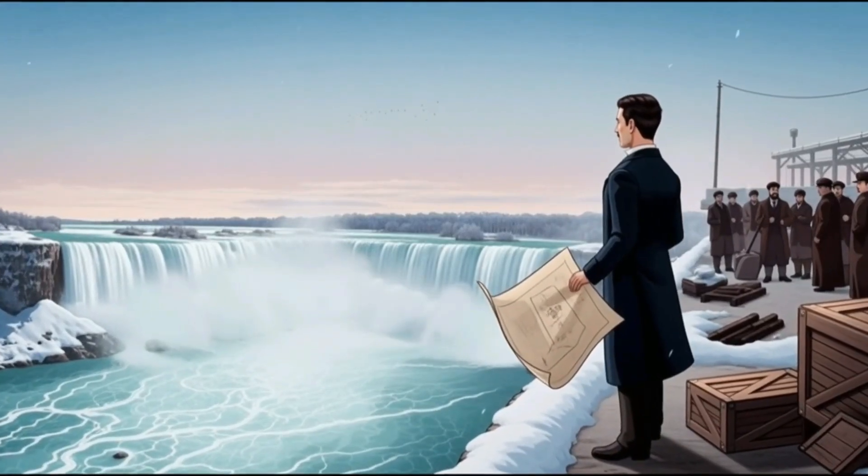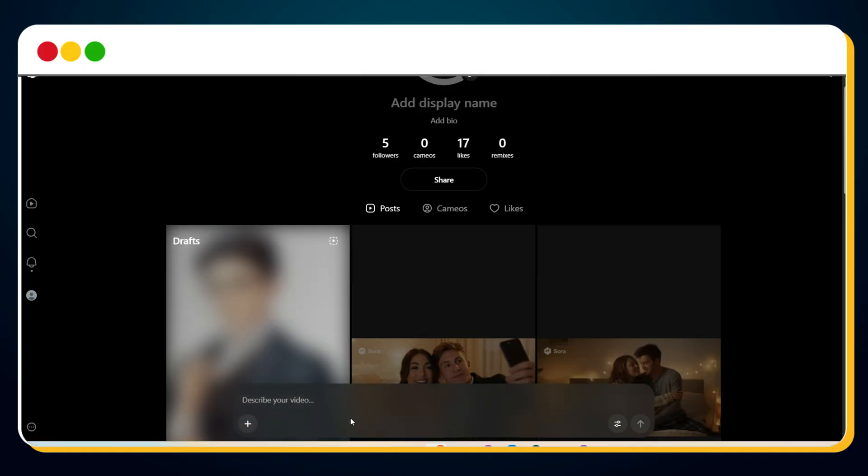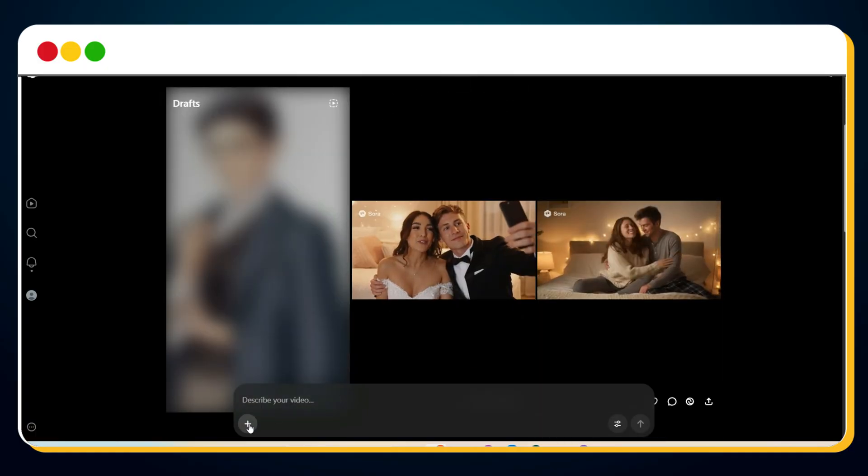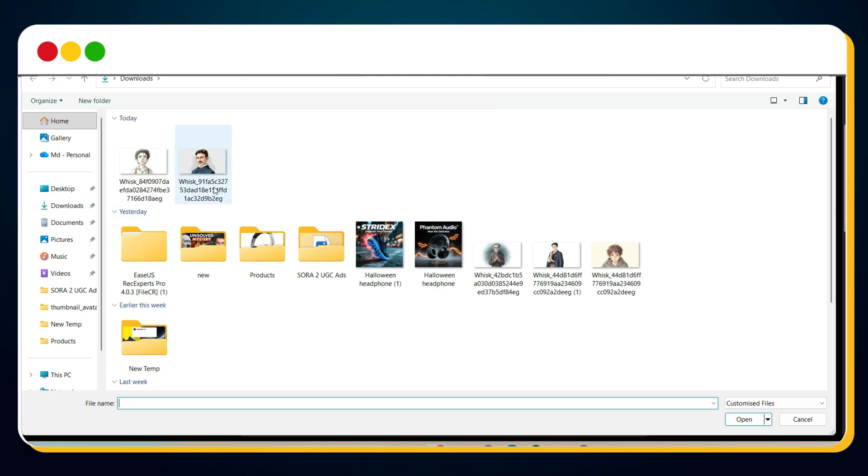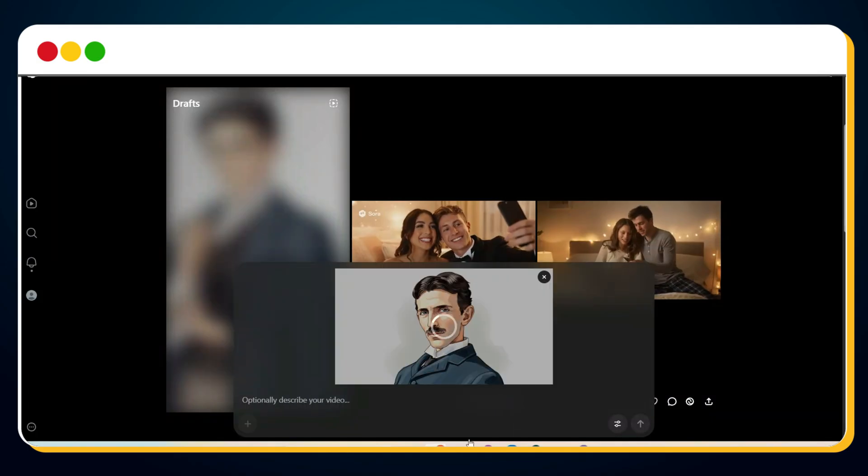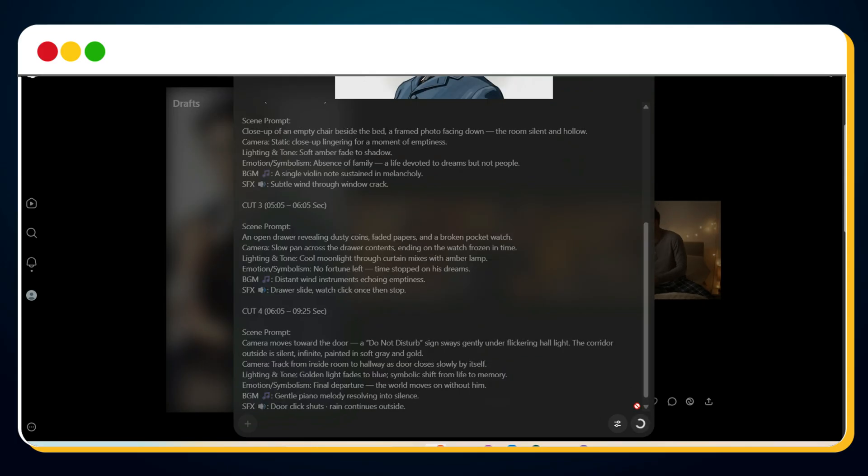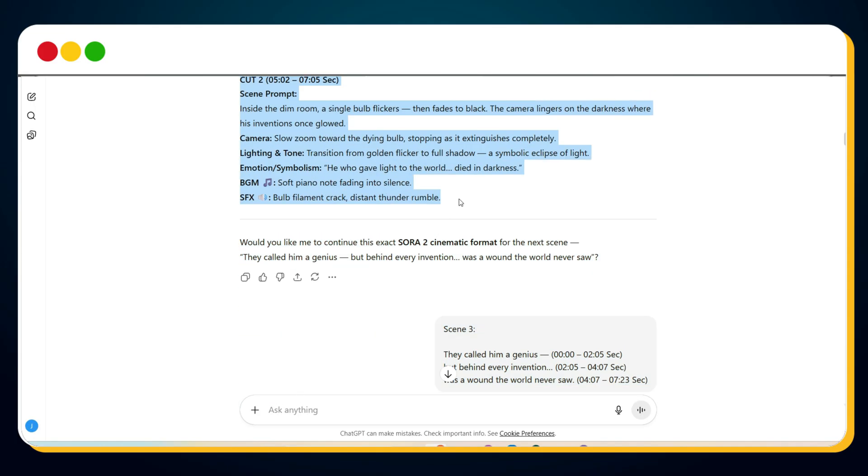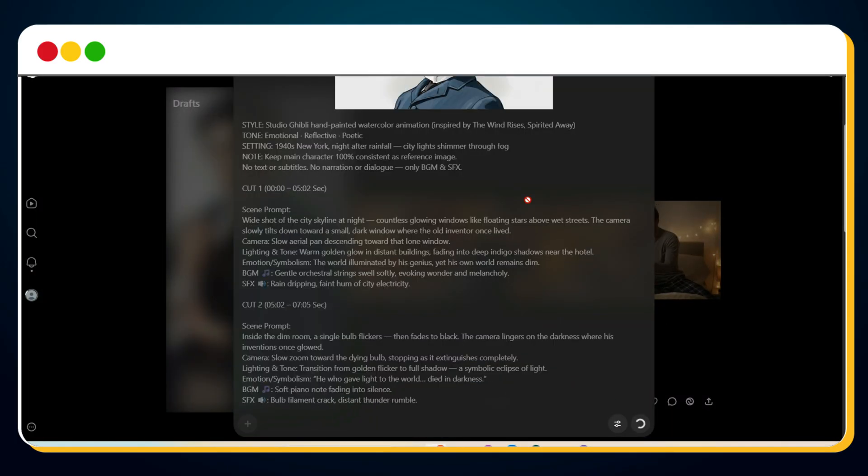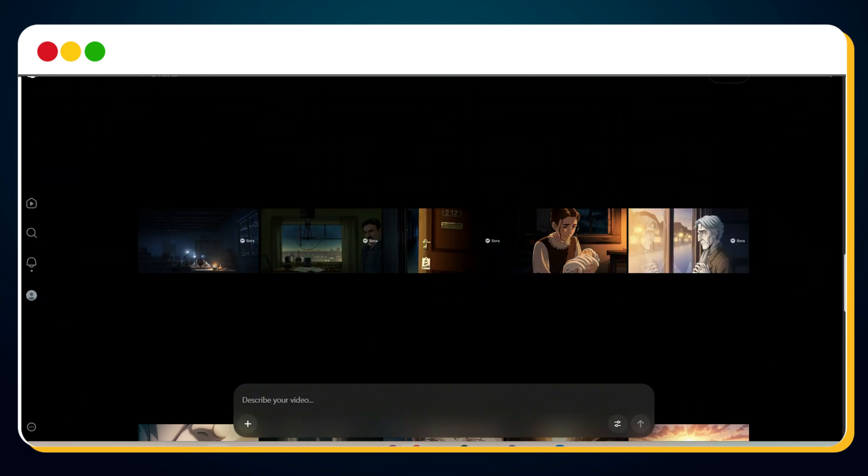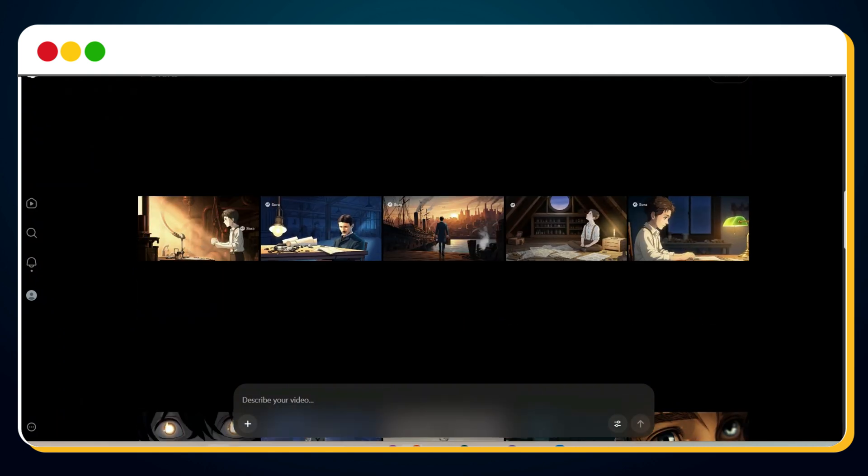So let's move to Sora 2, link in description. For Scene 1, upload the Adult Tesla character image. Copy the Scene 1 prompt, paste it into Sora 2, and hit Generate. Repeat this for every scene, using the correct character image for each one. And just like that, all our 2D animation clips are ready. Let's preview the first scene.